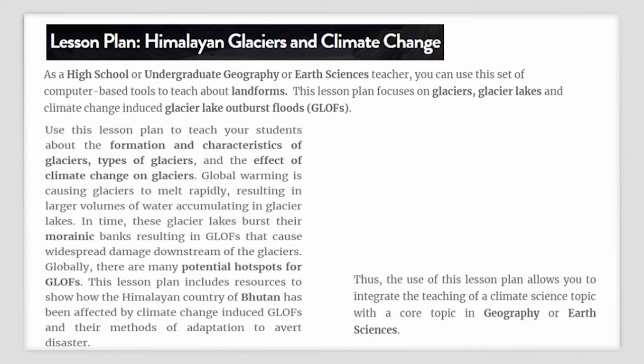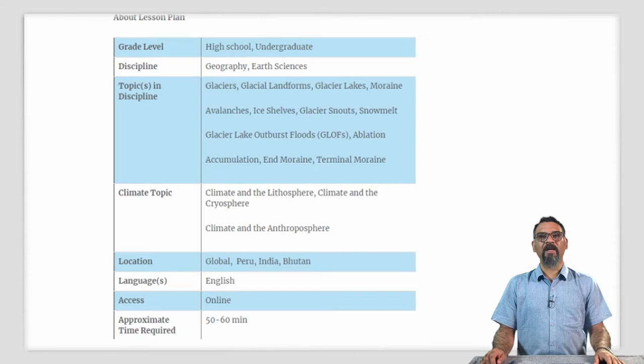The use of this lesson plan will allow you to integrate the teaching of a climate science topic with a topic in geography. The topics in discipline covered in this lesson plan include glaciers, glacial landforms, glacial lakes, moraines, avalanches, glacier snouts, snow melt, glacier lake outburst floods, ablation, accumulation and moraines in glaciers. The approximate time required for this lesson plan is between 50 to 60 minutes.